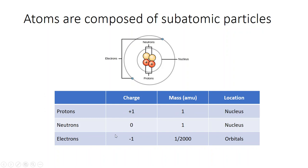Neutrons have no charge but also have a mass of one atomic mass unit. Electrons reside in shells outside of the nucleus. Electrons have a minus-one charge but contribute very little to the mass of an atom — they are about one two-thousandths of an atomic mass unit. Electrons exist in orbitals surrounding the nucleus, while the nucleus houses the neutrons and protons.